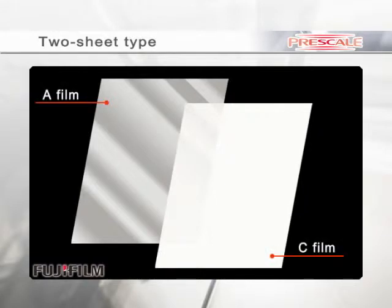There are two types of Prescale film. One is a two-sheet type for the pressure range between ultra-super-low and medium, 29 psi to 7,250 psi.